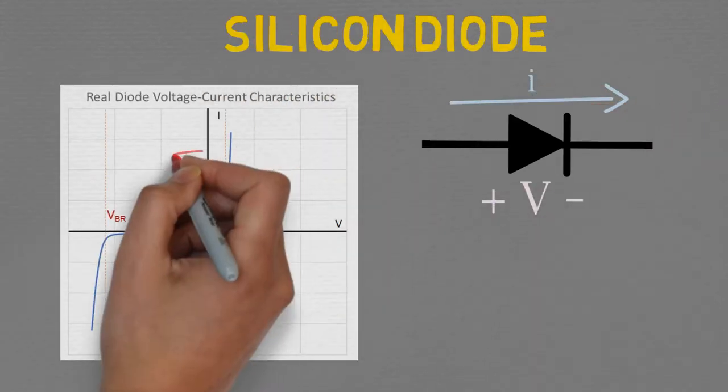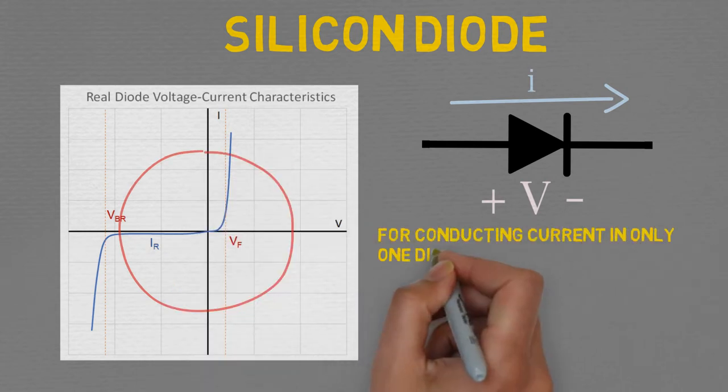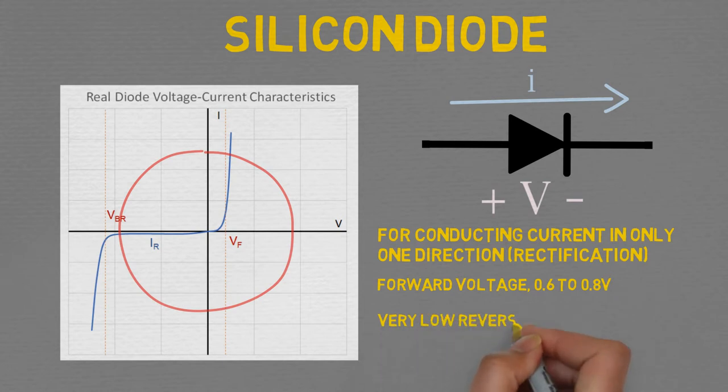They are used for conducting current in only one direction, also known as rectification. Silicon diodes have a forward voltage drop of 0.6 to 0.8 volts and have a very low reverse current, typically in the range of microamps, making them excellent current blockers in reverse bias.